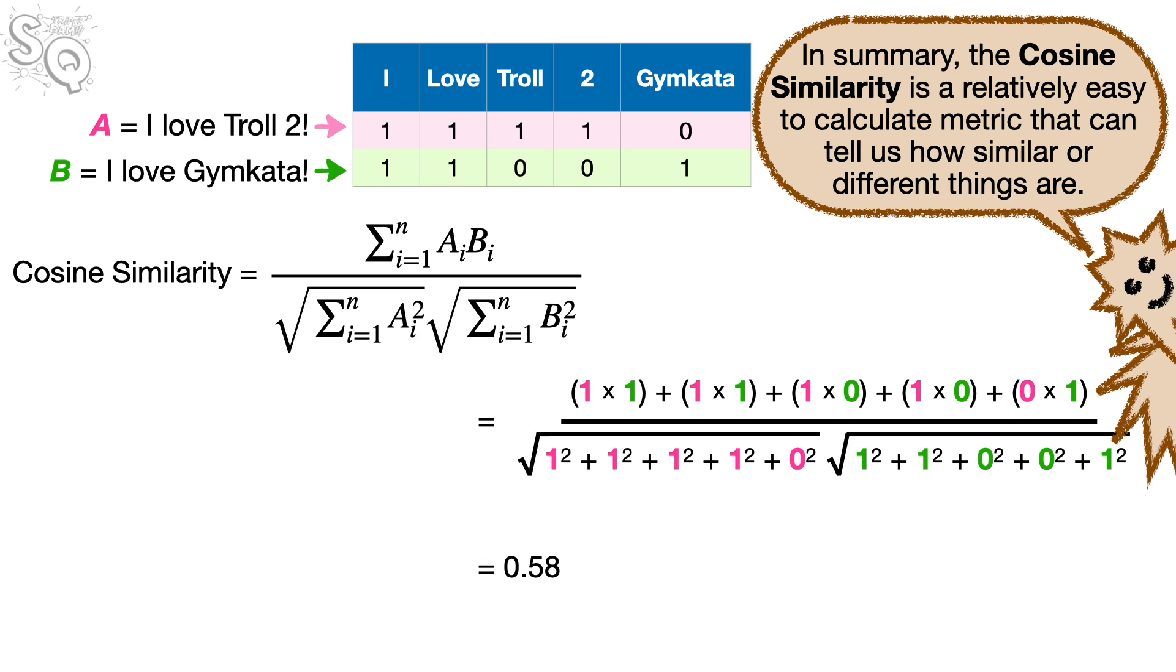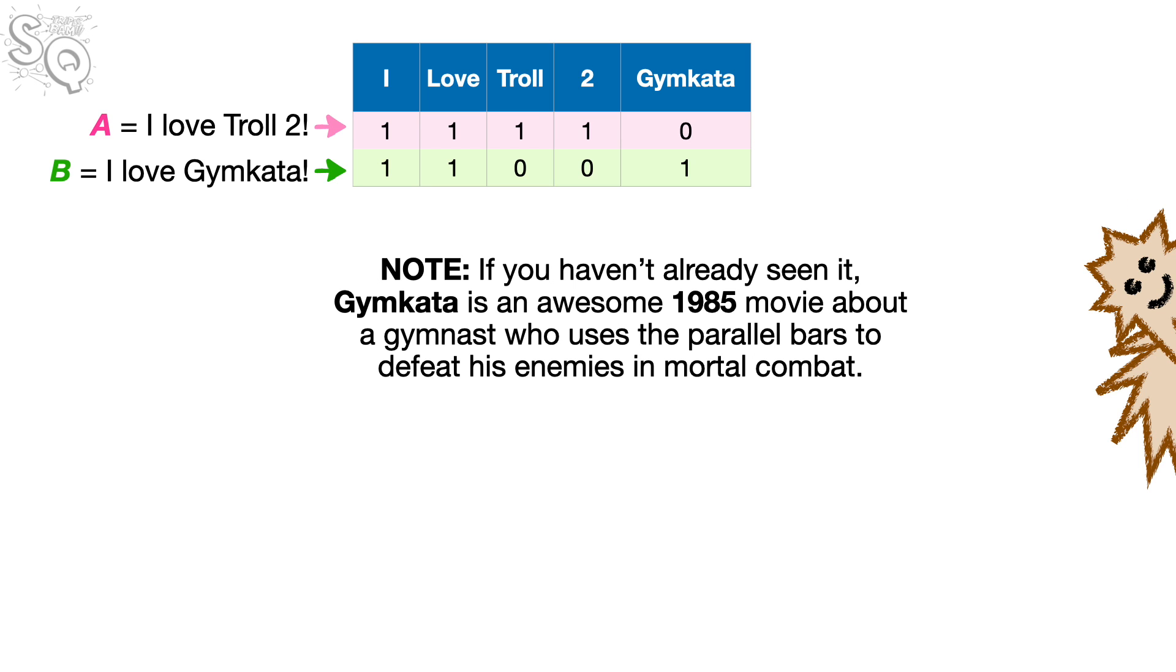In summary, the cosine similarity is a relatively easy to calculate metric that can tell us how similar or different things are. Note, if you haven't already seen it, Jim Cotta is an awesome 1985 movie about a gymnast who uses the parallel bars to defeat his enemies in mortal combat. Bam.